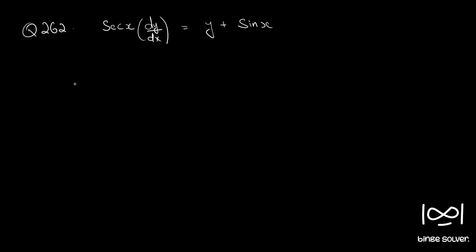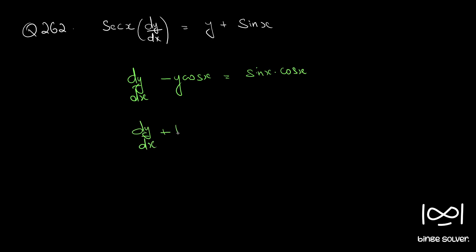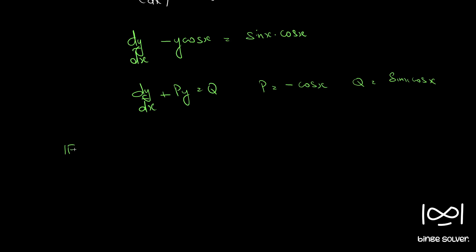Question number 262: sec(x) into dy/dx is equal to y plus sin(x). If you multiply throughout by cos(x), we have dy/dx minus y·cos(x) equal to sin(x)·cos(x). This is in the standard form of a linear differential equation, where dy/dx plus P·y equals Q, where P and Q should be constants or functions of x alone. Here P is minus cos(x) and Q is sin(x)·cos(x), both functions of x alone.